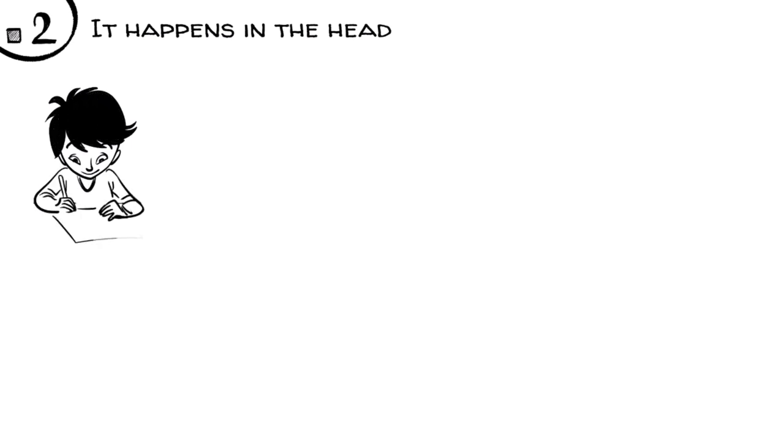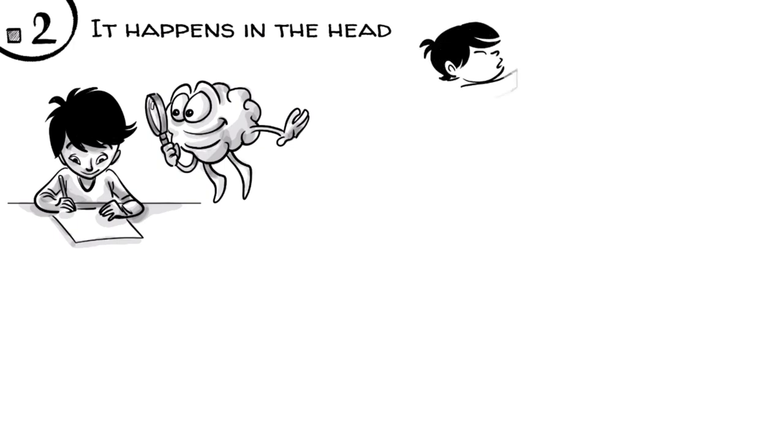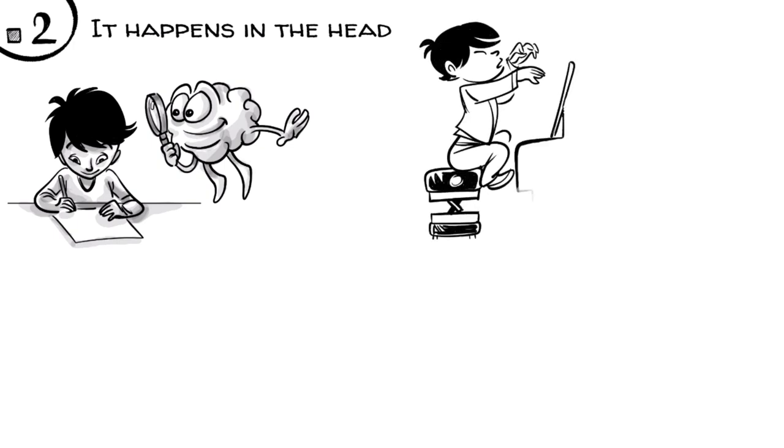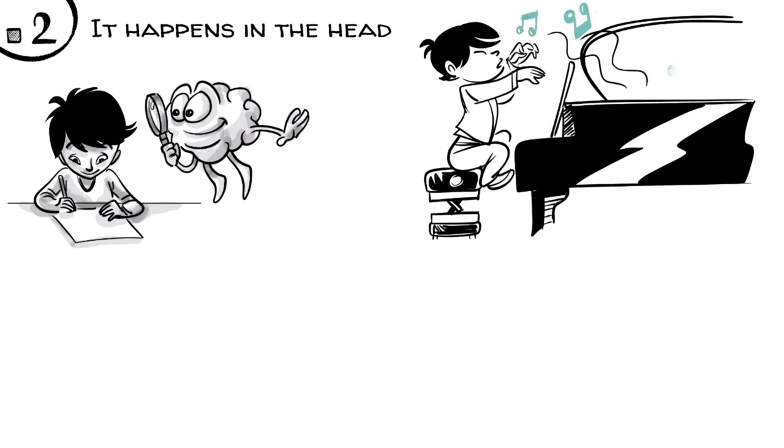It happens in the head. Whatever is on paper is merely a representation of mathematical thinking that happens in the brain, just like musical notes. What is on paper is just a representation of music that actually happens when someone plays the piano.